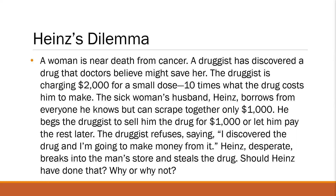So let me read the dilemma for you. A woman is near death from cancer. A druggist has discovered a drug that doctors believe might save her. The druggist is charging $2,000 for a small dose — 10 times what the drug costs him to make. The sick woman's husband, Heinz, borrows from everyone he knows but can scrape together only $1,000. He begs the druggist to sell him the drug for $1,000 or let him pay the rest later. The druggist refuses, saying, 'I discovered a drug and I'm going to make money from it.' Heinz, desperate, breaks into the man's store and steals the drug. Should Heinz have done that? Why or why not?